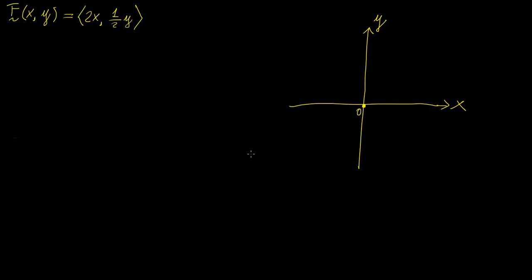Continuing with vector fields, in this video I'm going to show you some more examples of vector fields in two dimensions. We're going to start off with this one, and notice that I'm going to use the angled bracket notation, which is the shorthand notation for the IJ kind of notation that we were using in the previous video.